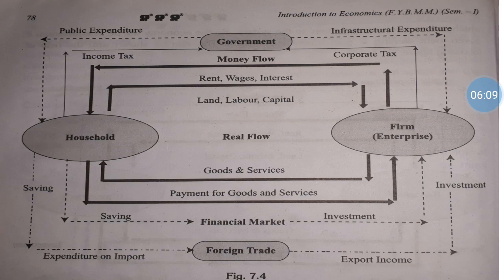Whatever money household earns from the firm, some of it will be used to purchase goods and services and the remaining money will be saved. Whatever money the firm earns, some amount will be used for the production of goods and services and the other money will be used for further investment. Due to saving and investment, a financial market is created.